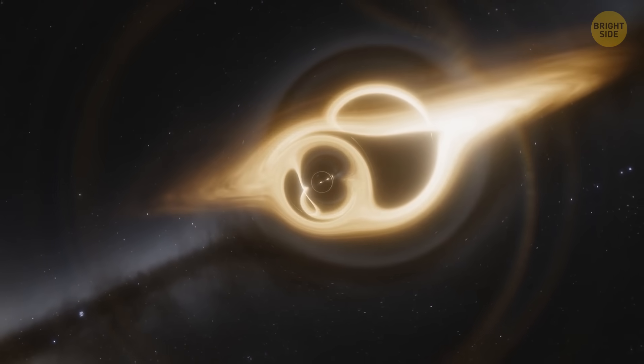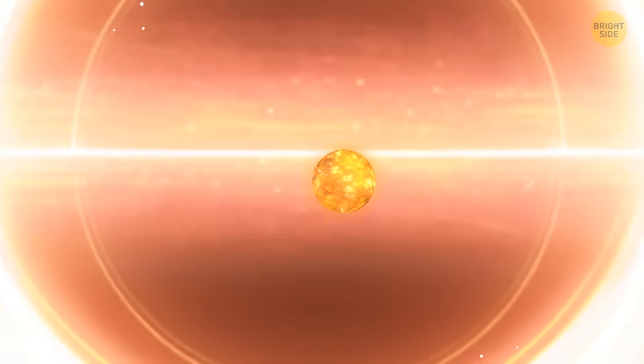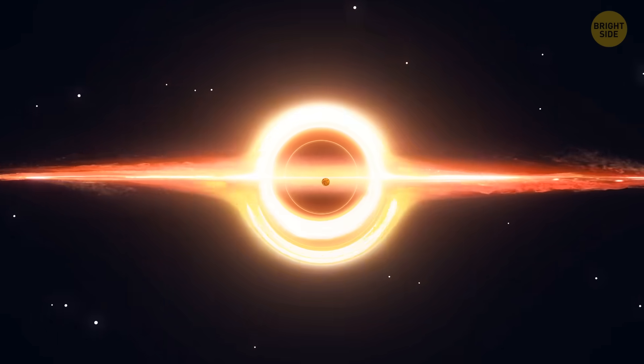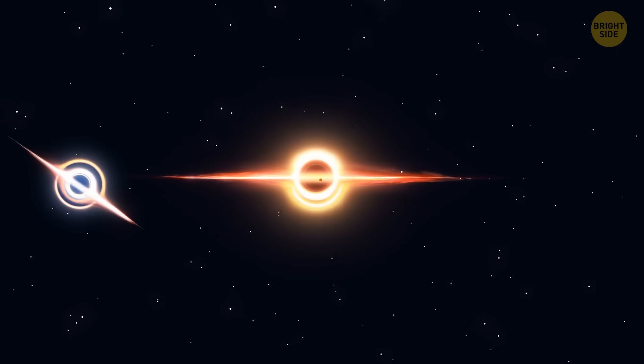Apparently, these black holes came across each other when their host galaxies collided. One of the black holes is around 200 million times the mass of our sun, and the other is a bit smaller, about 125 million times the mass of our star.